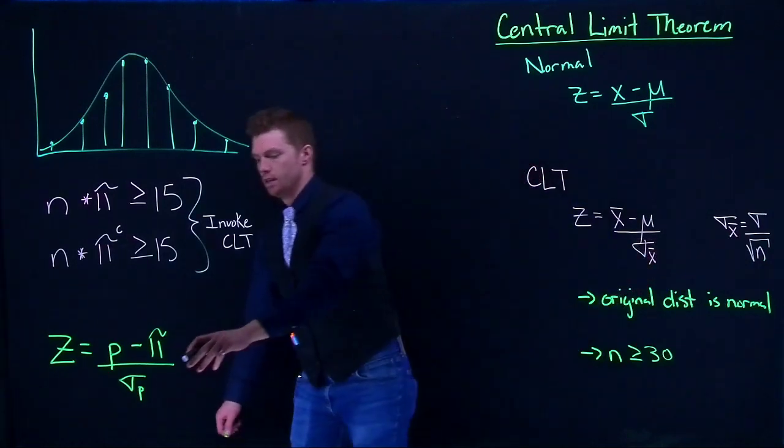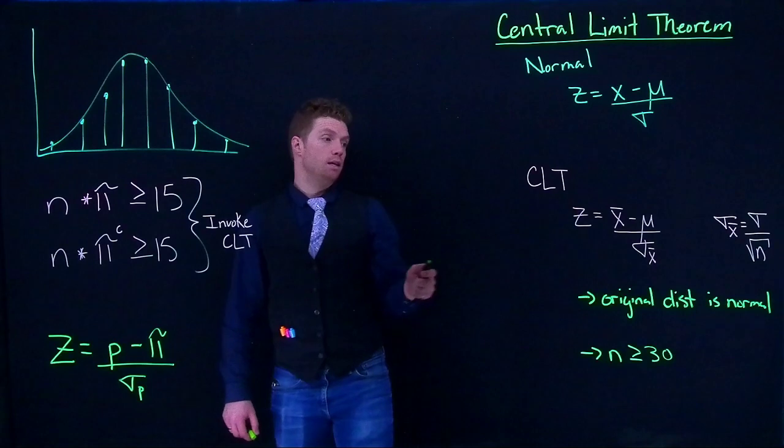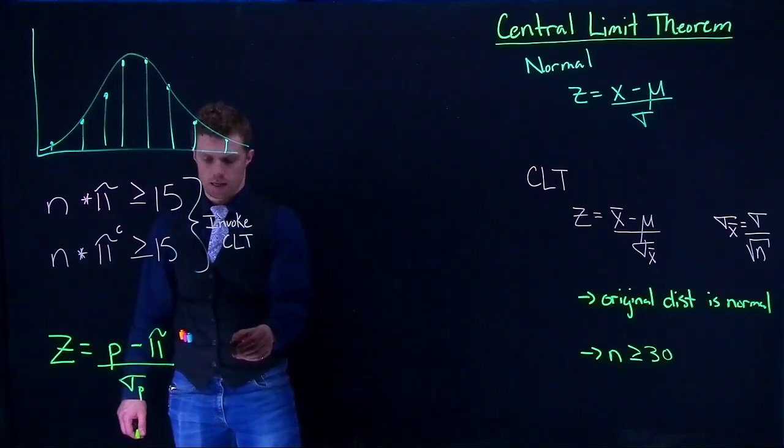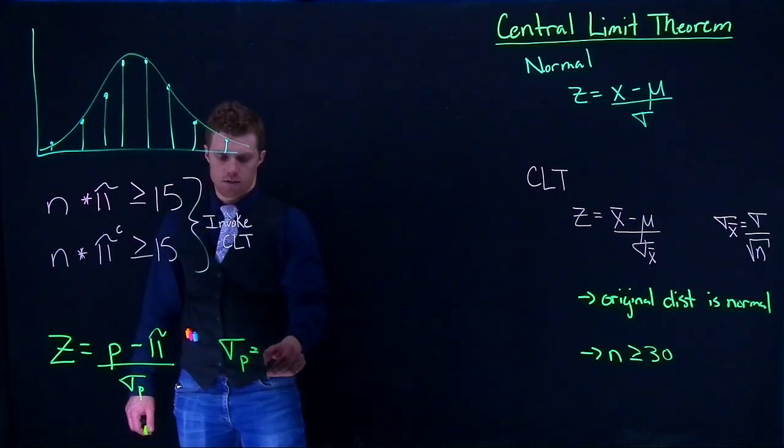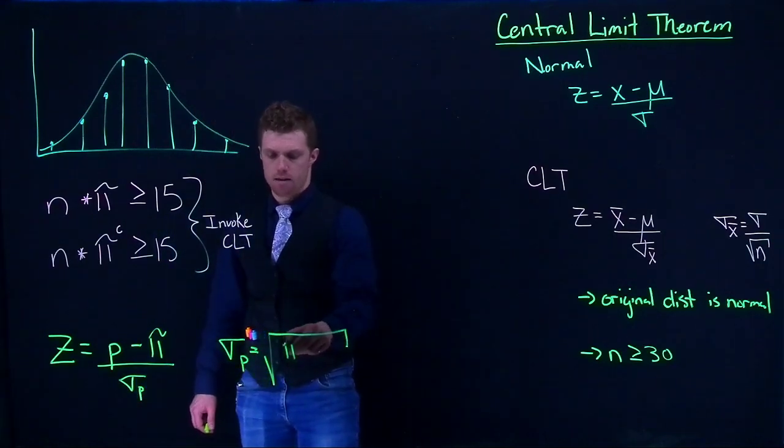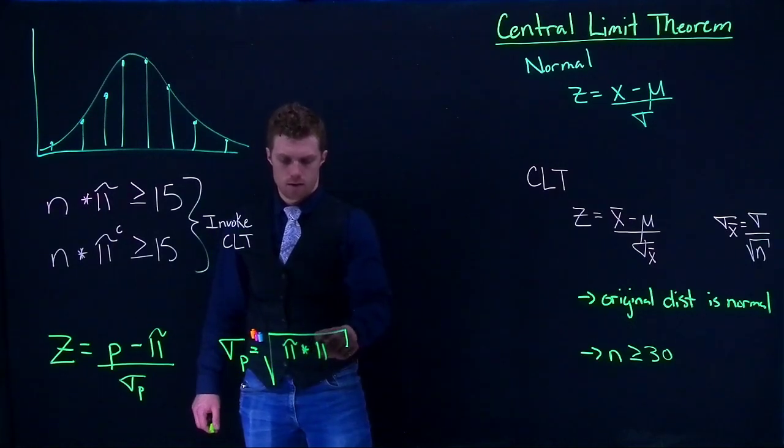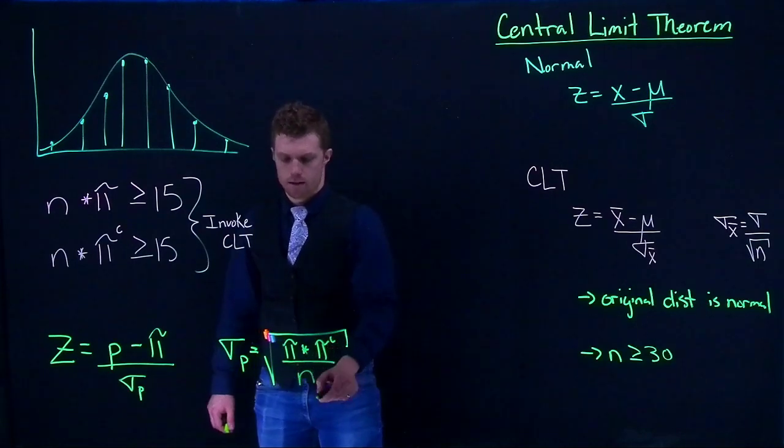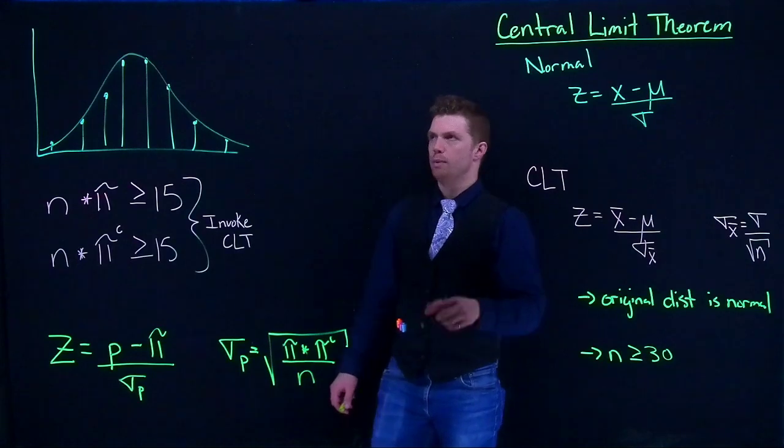And we have a standard deviation, and our standard deviation is a little different now. Instead of being σ_x̄, it's σ_p. And σ_p we can calculate by this: it is the square root of π times π complement divided by our sample size.